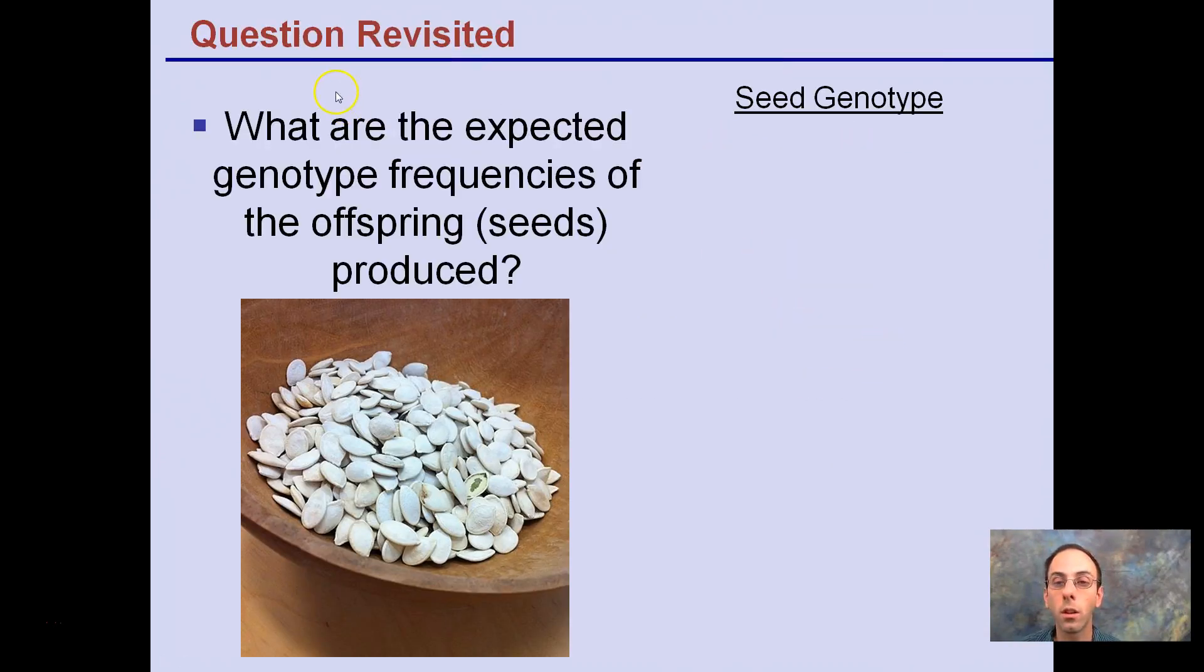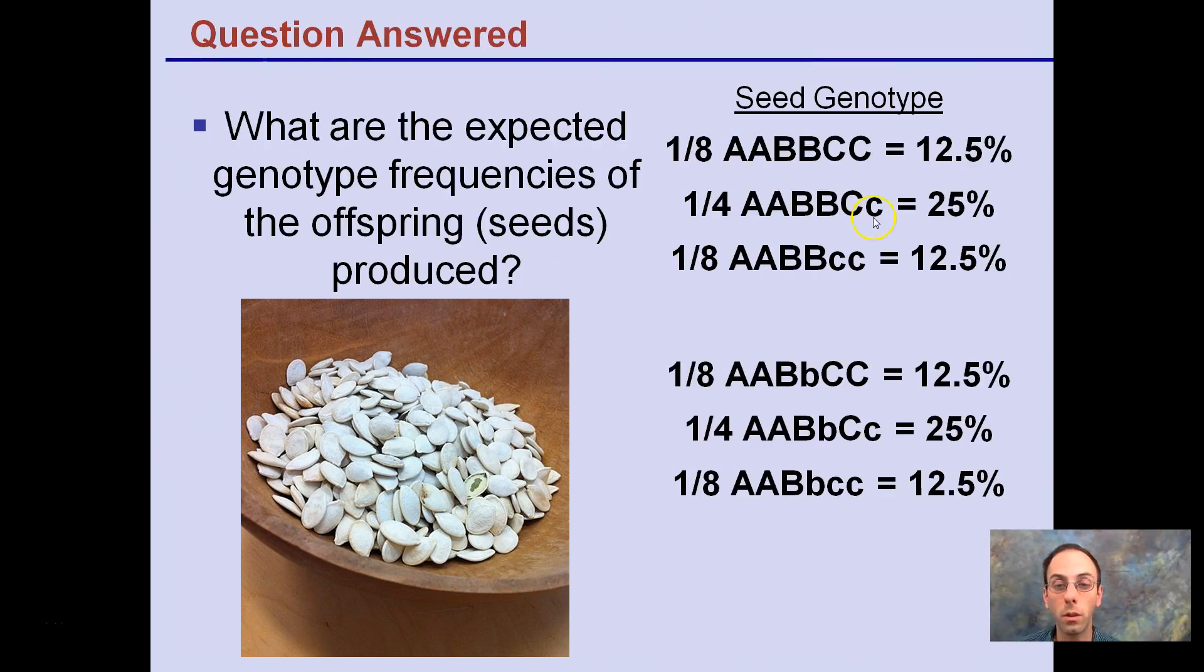Now, getting back to the question, what are the expected genotype frequencies of the offspring or seeds produced? Well, that would be indicated right here. You notice you have all of these percentages with these genotypes perfectly aligned and all set to go. If you were to add these up, you would also get a hundred percent, which is a way to check to make sure you've calculated or accounted for all the seed genotypes.